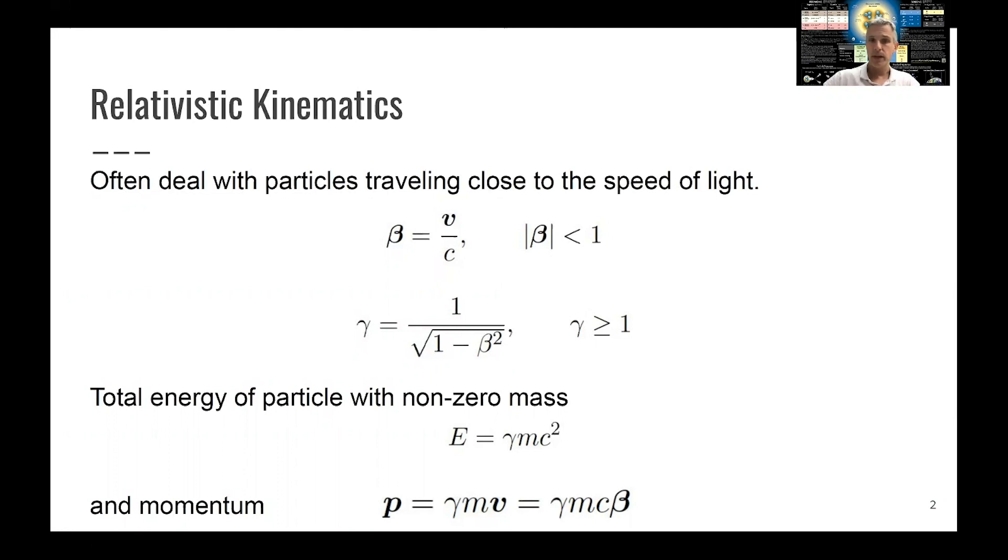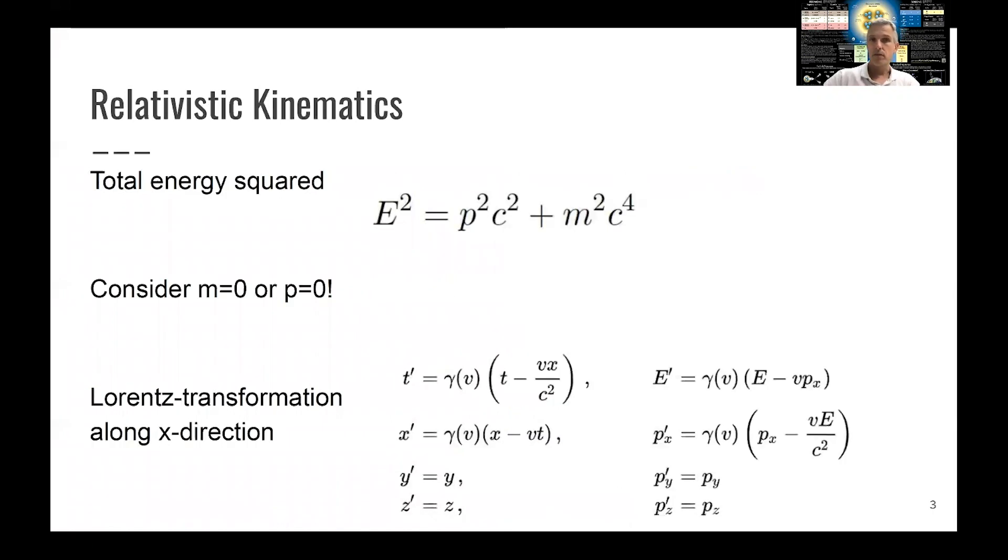The total energy of a particle with non-zero mass is then given by gamma times mc squared. And the momentum is given by gamma times mv or gamma times m beta. The total energy squared of a particle, and we are considering one particle, is given by energy squared equals momentum squared plus mass squared.